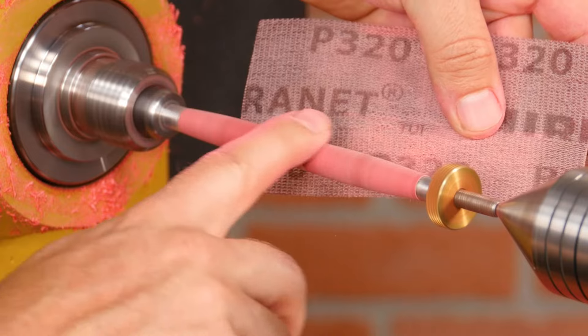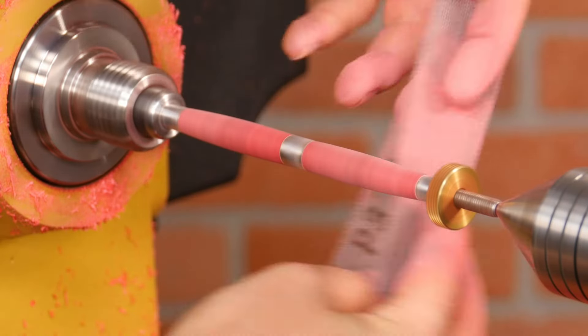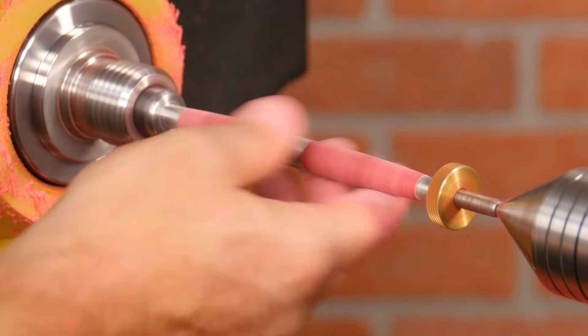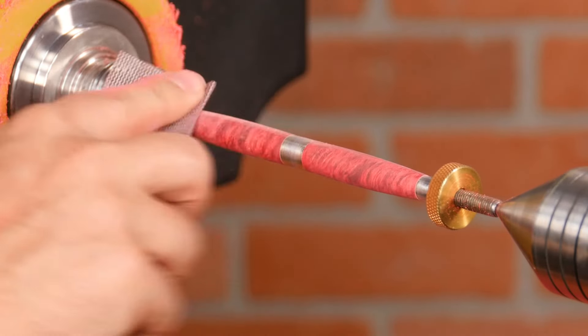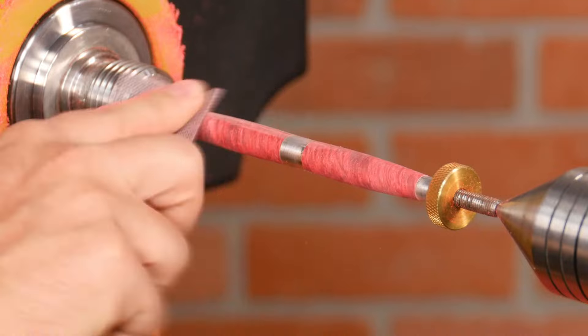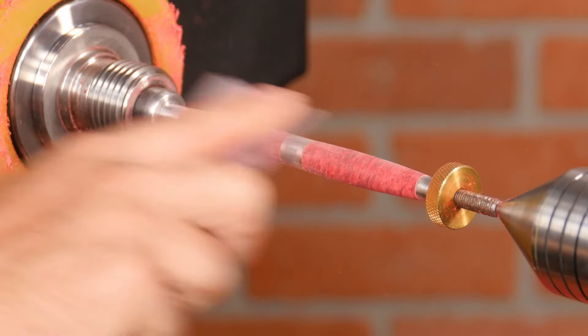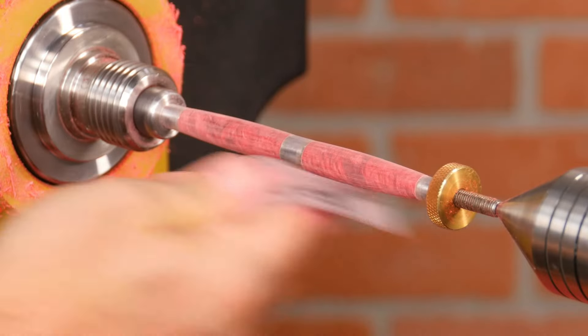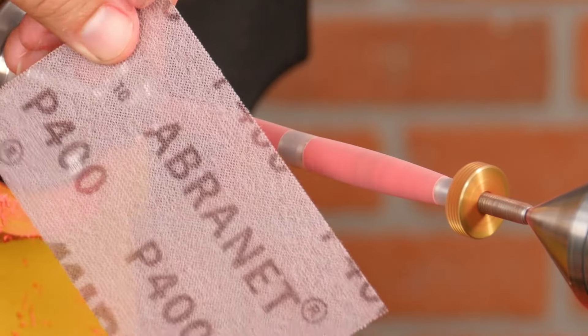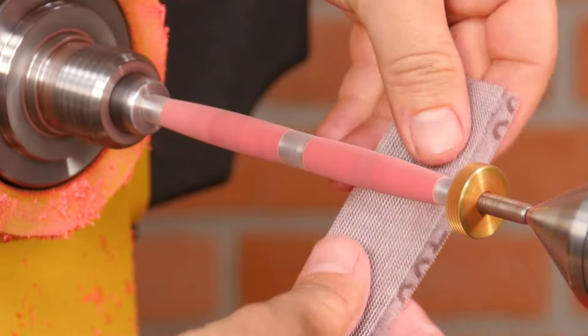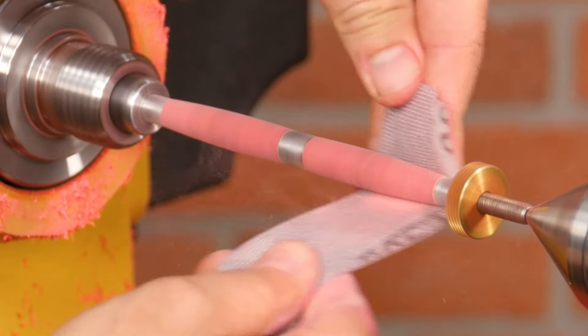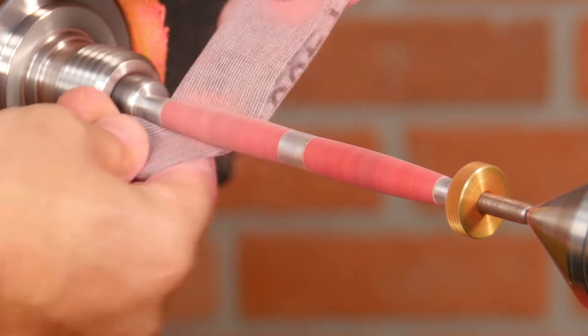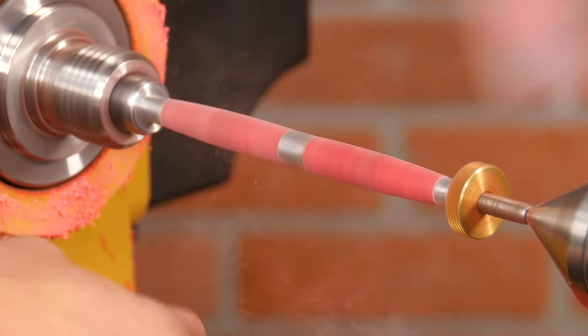Spend more time on the coarser grits as they'll even out the turning and the finer grits will polish the blanks. Work your way through the grits, stopping the lathe and sanding laterally between each grit. This will get rid of the radial scratches that form when sanding on the lathe. I'll sand through at least 600 grit.